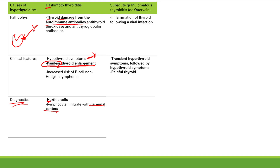This one presents a little differently. First you get transient hyperthyroid symptoms, and then you become hypothyroid. Why? Because the inflammation causes release of stored thyroid hormone — whatever was stored gets released, producing transient hyperthyroid symptoms: feeling hotter than normal, sweating, weight loss, warm moist skin, diarrhea, and increased activity.